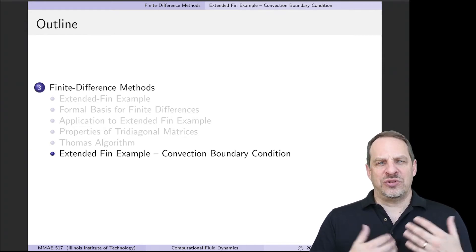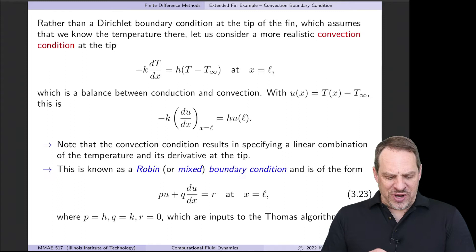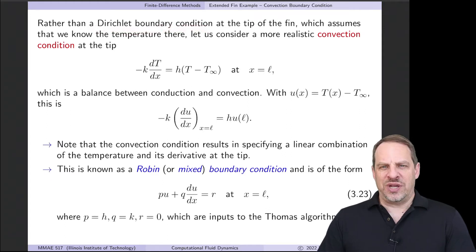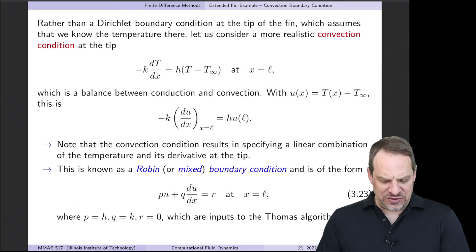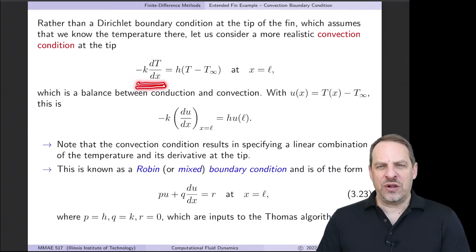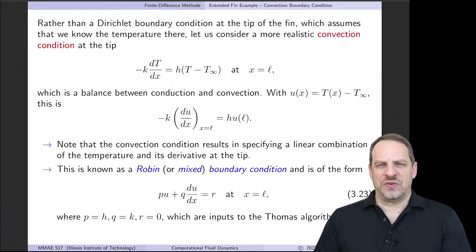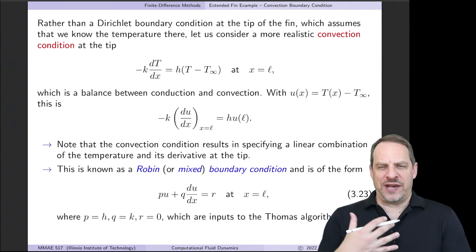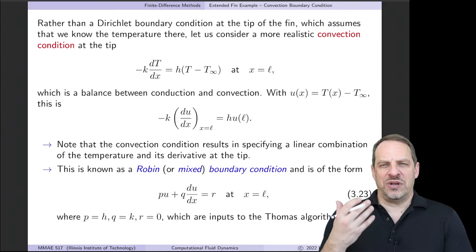This convection boundary condition allows us to discuss more general boundary conditions and how we incorporate those into the finite difference method. Rather than the Dirichlet condition, we now have a convection condition applied at the tip, at x equal to L. It expresses that the heat conducting out of the tip according to Fourier's law equals the heat being convected away, which is h times the temperature difference. So this is minus K times the temperature gradient — the heat flux out of the tip — where K is the thermal conductivity of the fin material.